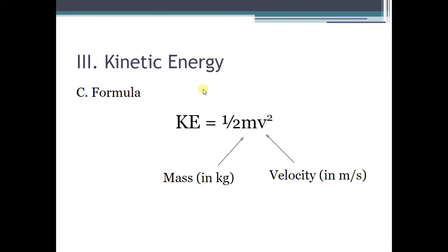Here is how we figure out kinetic energy — just like potential energy, there are only three things we're multiplying together. To figure out kinetic energy, we take one half (or 0.5) and multiply it times the mass of whatever object we're talking about — again, you'll know it's the mass because it's in kilograms — and then multiply it by the square of the velocity, which is in meters per second. Whenever the problem tells you the velocity, you need to square it — multiply it by itself — first before you do the rest of the multiplication. One tip: square the velocity first, push equals in your calculator, and then multiply by the mass and by one half.